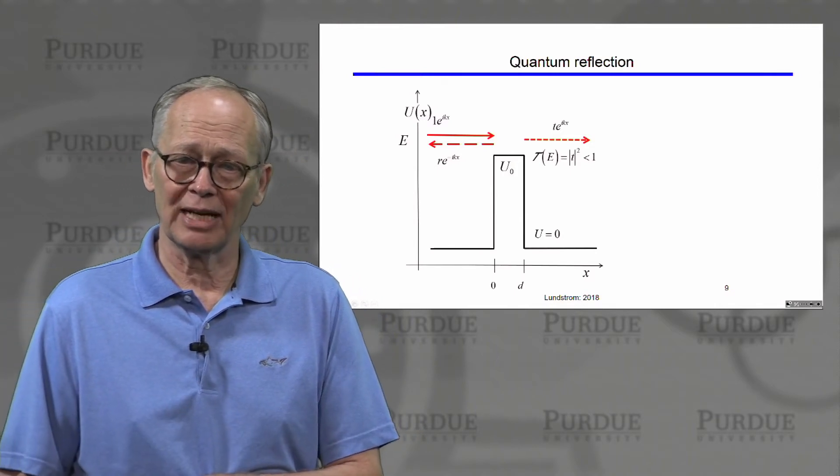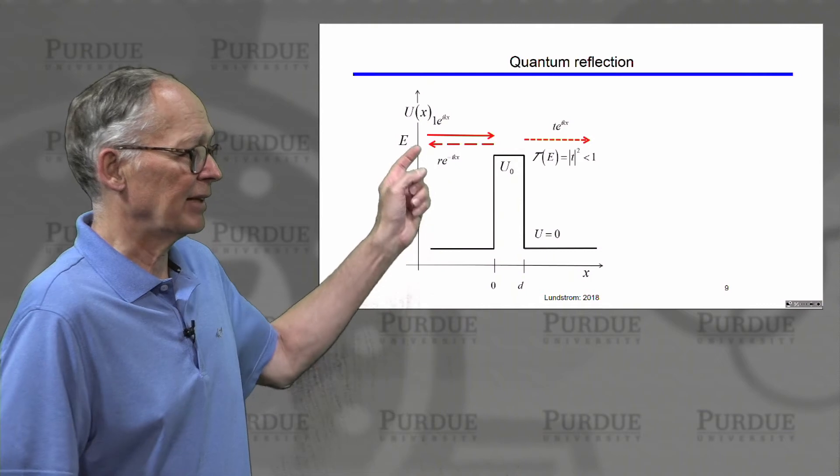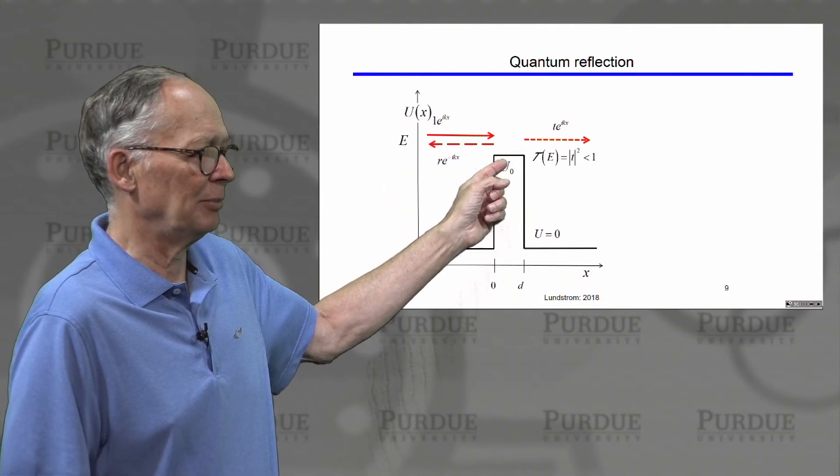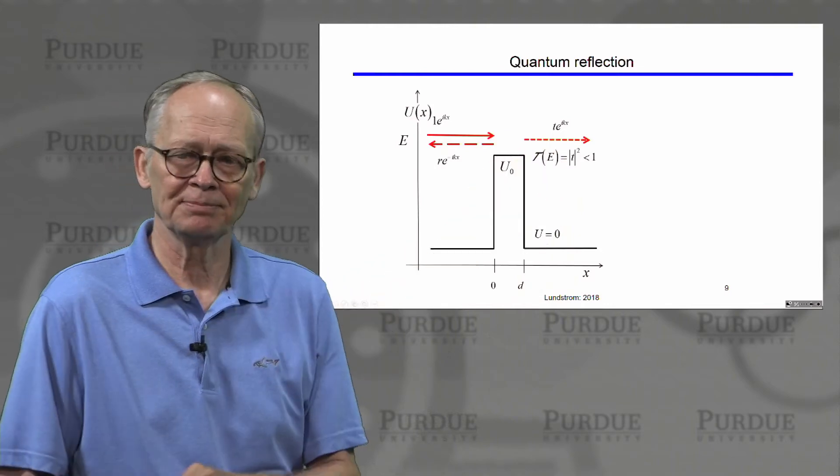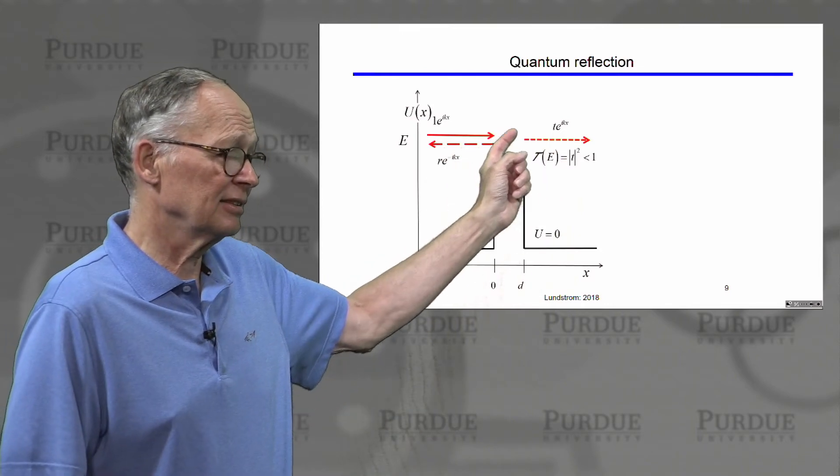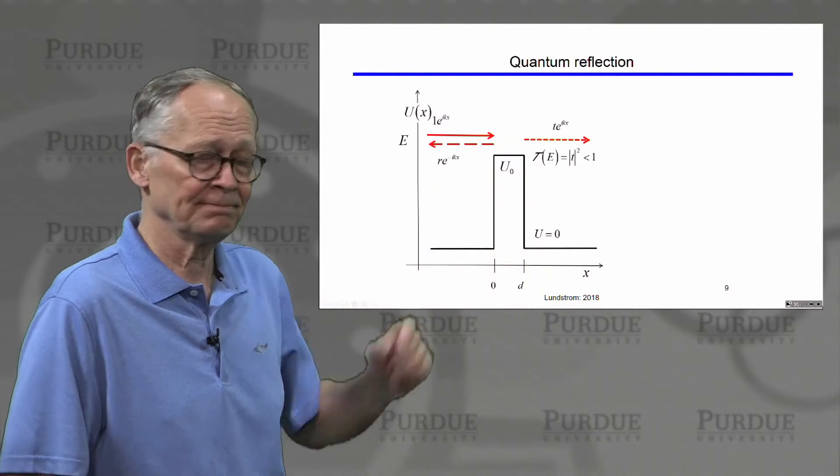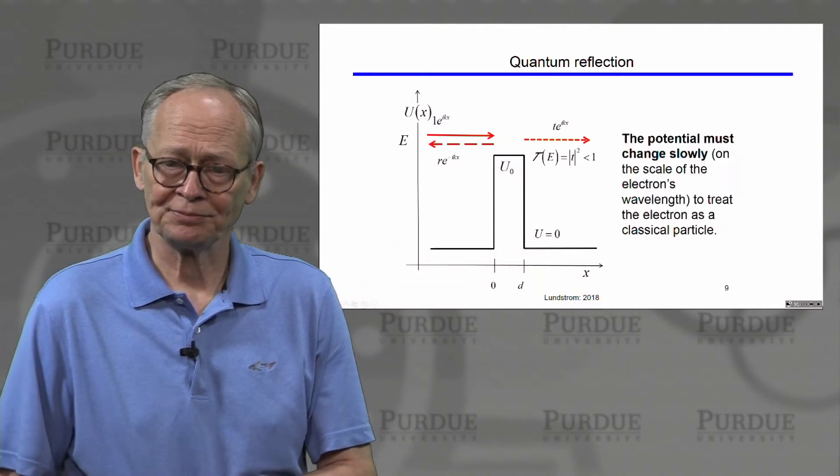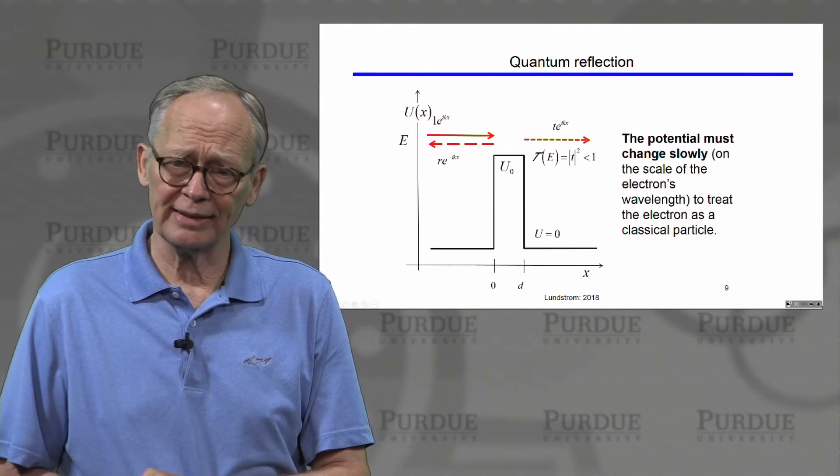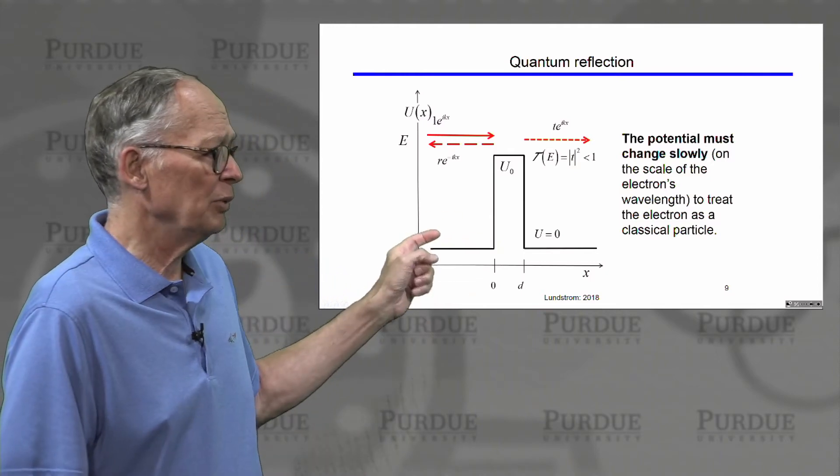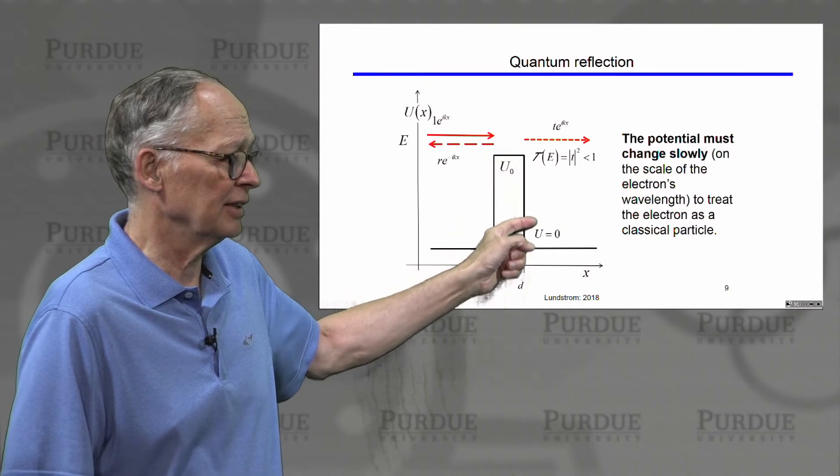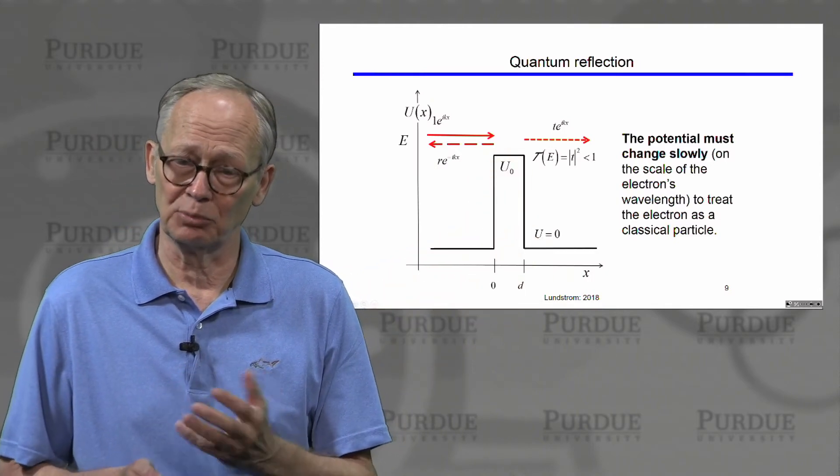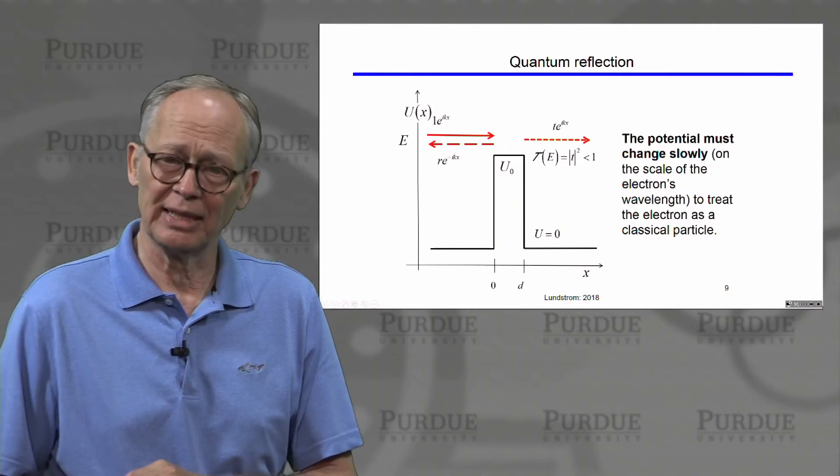There's also the phenomenon of quantum mechanical reflection. If a classical particle had an energy above the top of the barrier, it would just go across. Quantum mechanically, there's still some probability that it will reflect and only some portion of it will transmit across. In order to avoid these kinds of reflections, we would have to slowly vary the potential energy and it would have to vary slowly on the scale of the electron's de Broglie wavelength, in order to minimize those reflections.